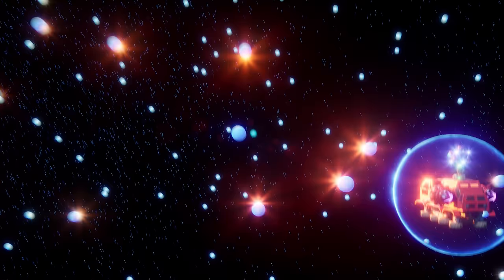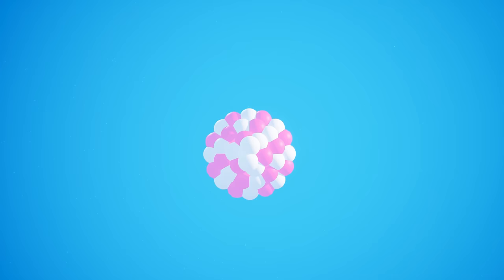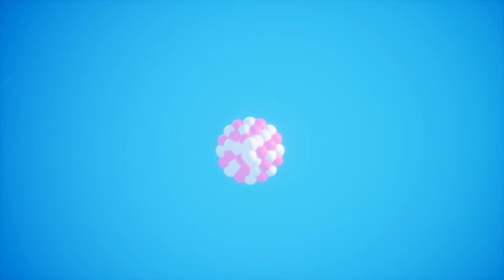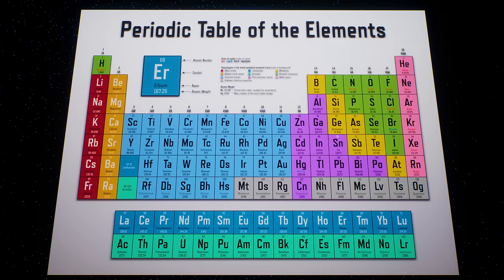This new atom is called a helium atom. If an atom has a different number of protons, we call that a different element. Heavier elements can have many protons, neutrons and electrons, like this heavy element called iron, which has 26 protons buzzing around it. Scientists have discovered 118 different elements so far.